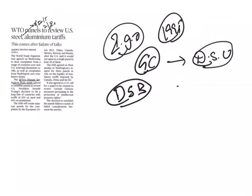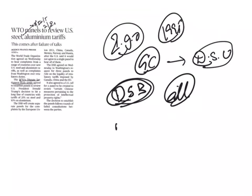The Dispute Settlement Body is made up of representatives from all member governments, usually represented by ambassadors or people with equivalent positions. The main responsibilities of this body are: establishing dispute settlement panels, adopting panel and appellate body reports, maintaining surveillance of implementation of rulings and recommendations, and authorizing the suspension of obligations under the covered agreements of the Dispute Settlement Understanding.